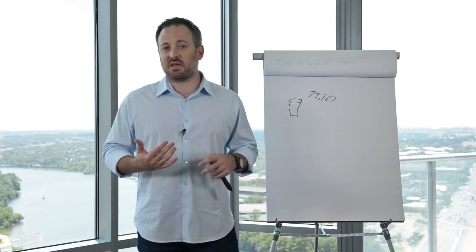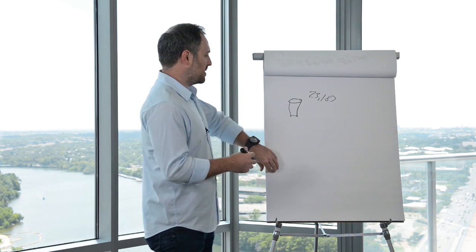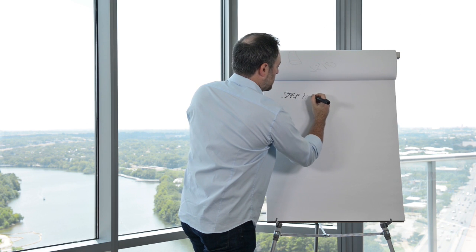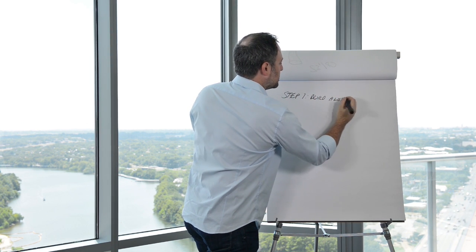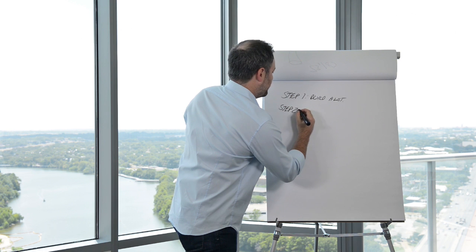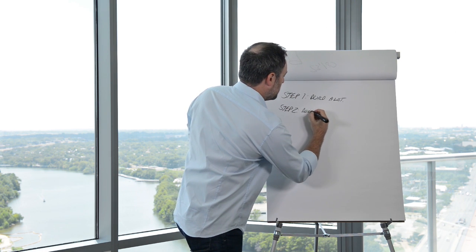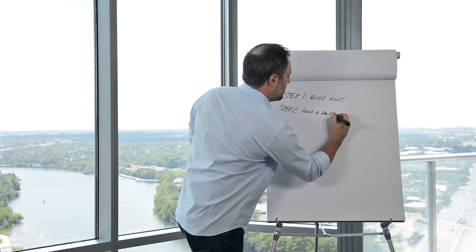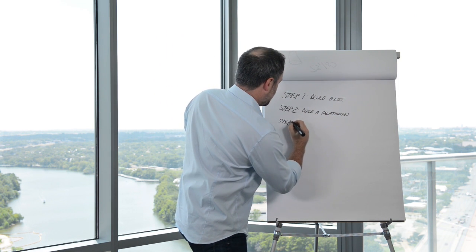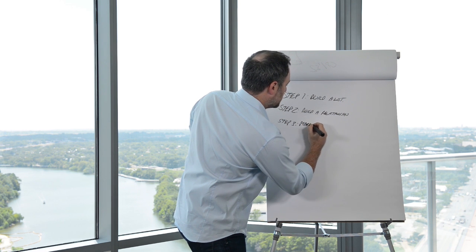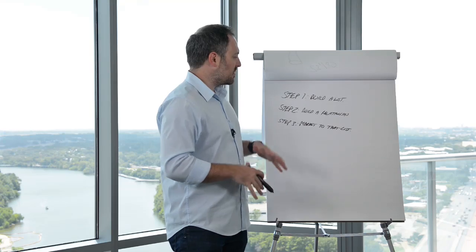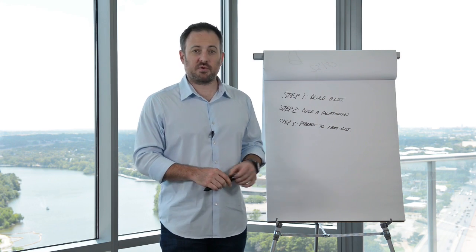My business model is very simple. It's three steps. Step number one, build a list. Build your distribution channel. Step number two, you've got to increase the value of that distribution channel by building a relationship with the people on that list. And that brings us to step number three, which is market to that list. This is my business model summed up in the most simple way possible in three simple steps.